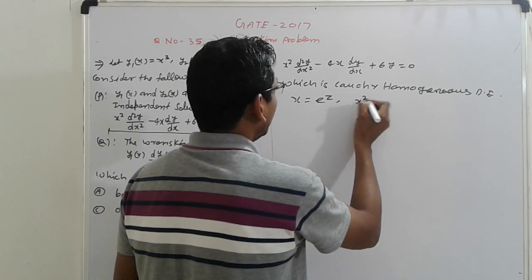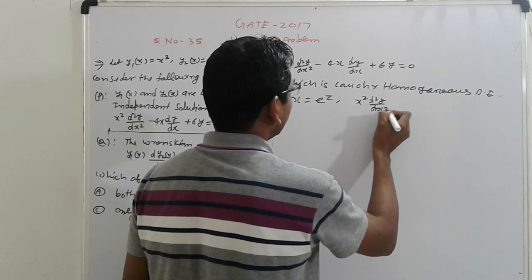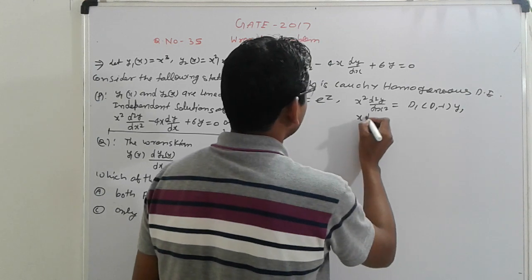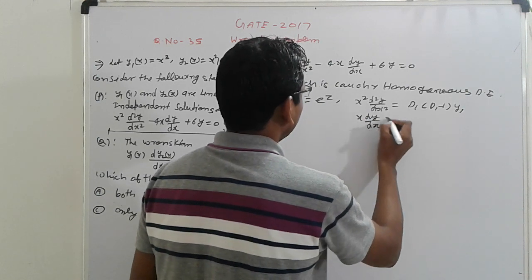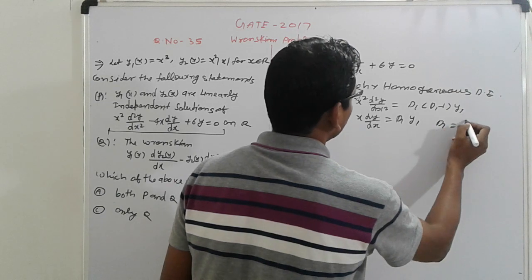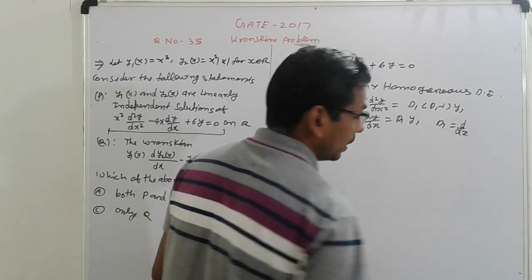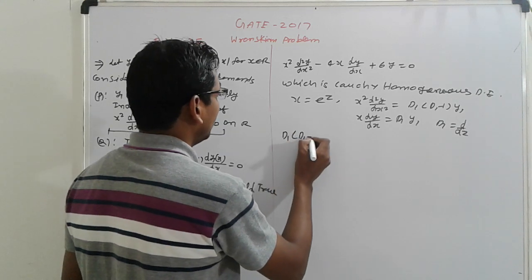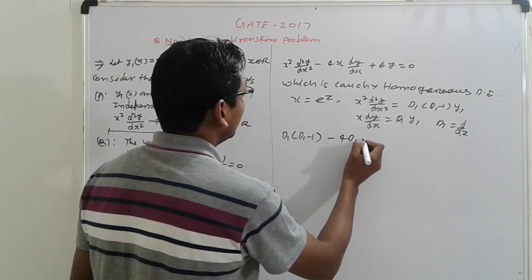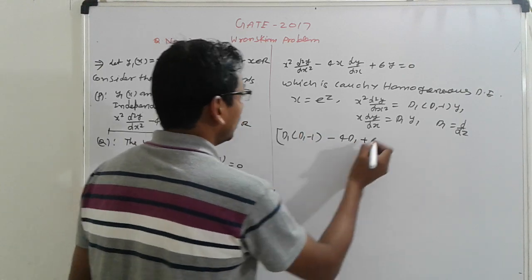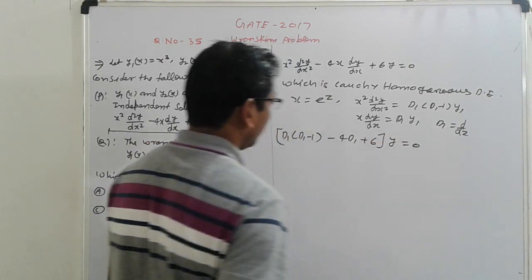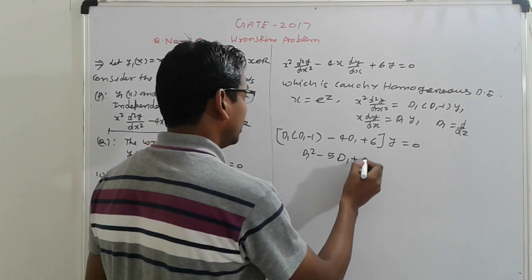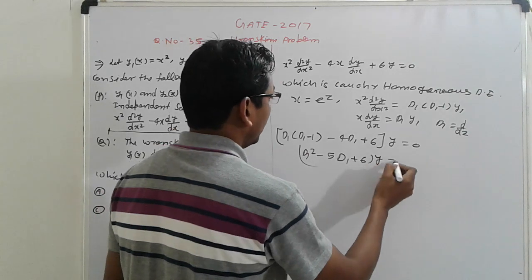This is given: X² d²Y/dX² - 4X dY/dX + 6Y = 0. X² d²Y/dX² substitute D1(D1-1)Y. X dY/dX is equal to D1Y, where D1 = d/dZ. Substituting this we get D1(D1-1) - 4D1 + 6Y = 0. This is D1² - 5D1 + 6Y = 0.